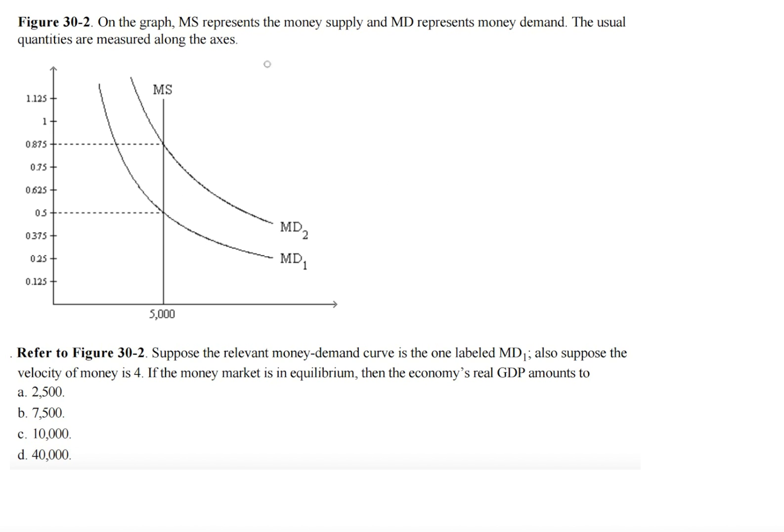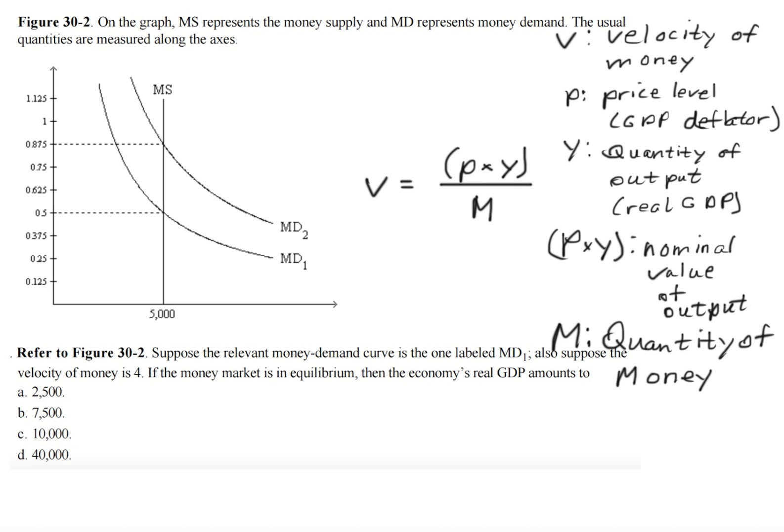The reason for that is we first need to understand what the components of the velocity formula mean. V represents the velocity of money, P is the price level or the GDP deflator, Y is the quantity of output or real GDP. And if we multiply P and Y together, we get the nominal value of output. And lastly, M is the quantity of money.